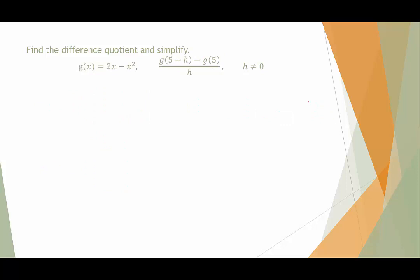In our next example, we have g(x), which is defined by 2x minus x squared. And we're going to do the same thing. We're going to plug in 5 plus h for g and simplify. And then we're going to plug in 5 in g and simplify. And then we're going to put it all back together.